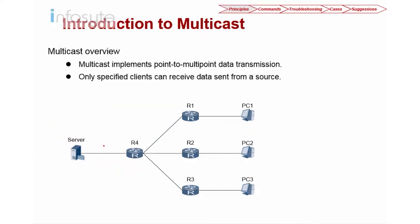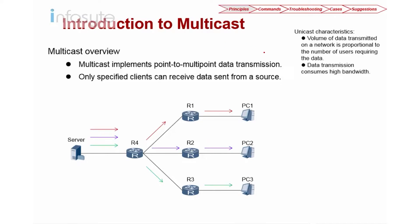Looking at the unicast definition: the volume of data transmitted on the network is proportional to the number of users requiring the data. Basically, if I have two receivers I need two streams, and if I have three receivers I need three streams. Data transmission consumes high bandwidth because even if it's the same data, the router needs to process and look up each packet individually before forwarding.